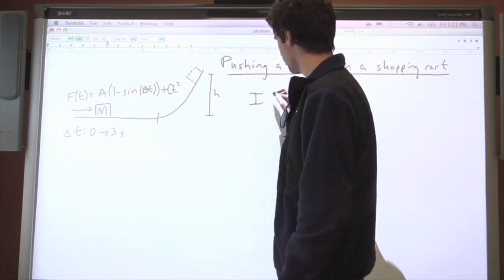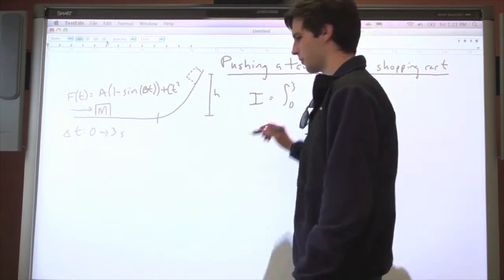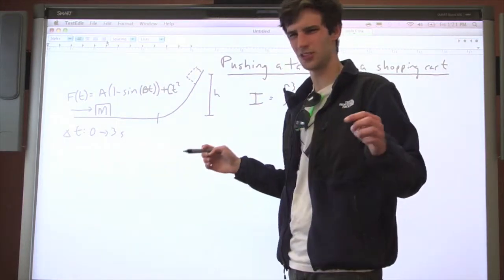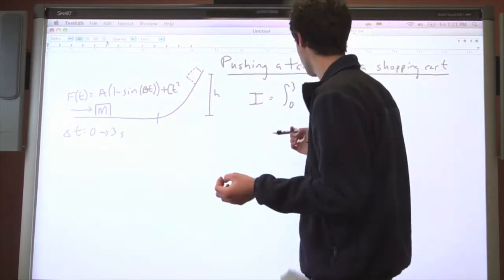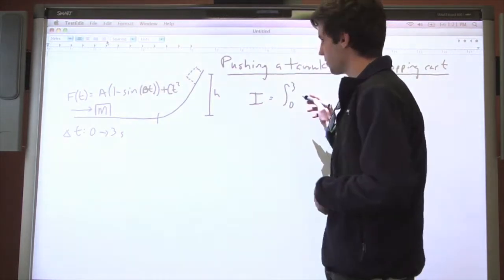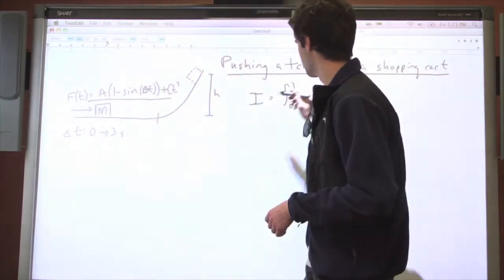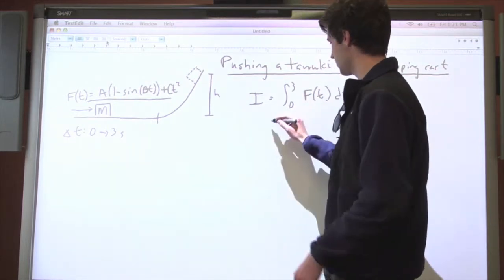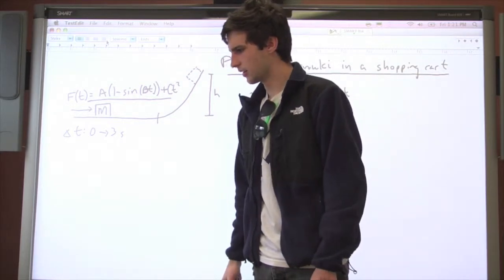What we're going to do is we're going to say impulse, in this case, equals the integral from zero, and I'm going to say three. It should be three seconds, and everywhere that there should be three seconds, I'm just going to write three. I'm just going to assume you'll use proper units for all of the constants. So integral from zero to three of this thing, I'm just going to call it f of t dt. And this is just a definite integral, so you can take that if you want to, but I actually wrote down the answer.